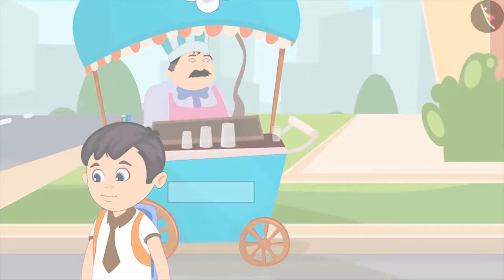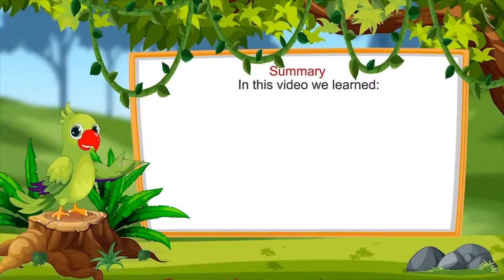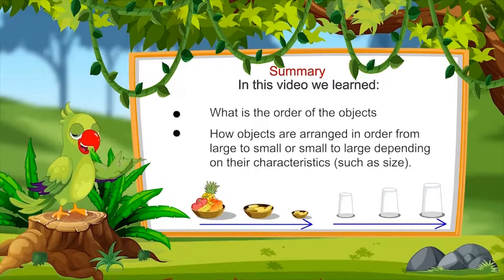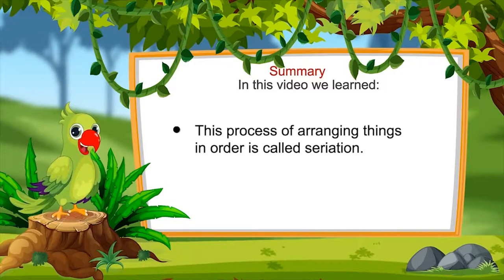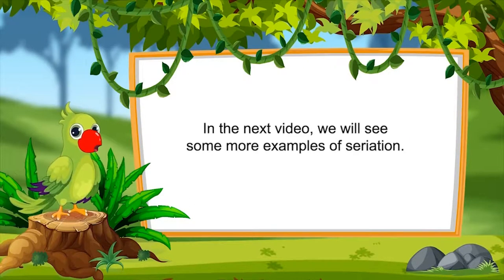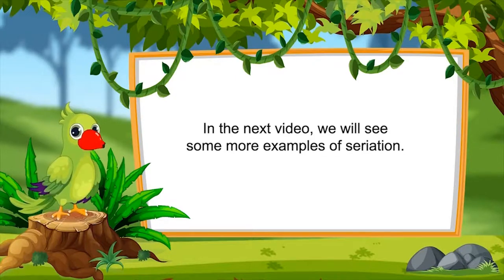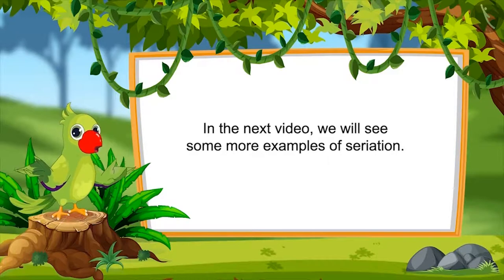So, children, that is all for today. In this video, we have learned what is the order of objects and how objects are arranged in order from largest to smallest or smallest to largest depending on their characteristics. This process of arranging objects in an order is called seriation. In the next video, we will see some more examples of seriation. Till then, you should practice arranging the objects around you in different types of order based on their characteristics. Bye, friends!